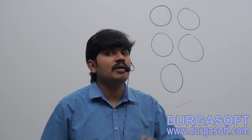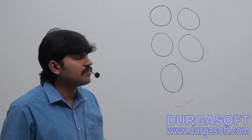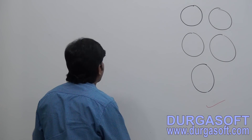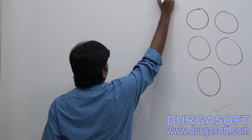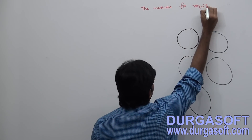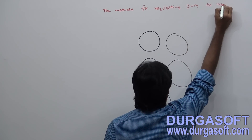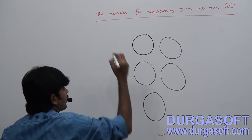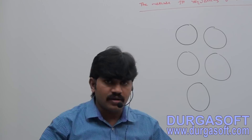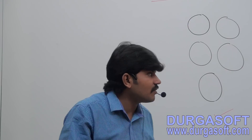What are the various methods for requesting JVM to run garbage collector? We have to discuss. Before discussion of these methods, there are one or two important conclusions I have to explain. Let me explain one small analogy.